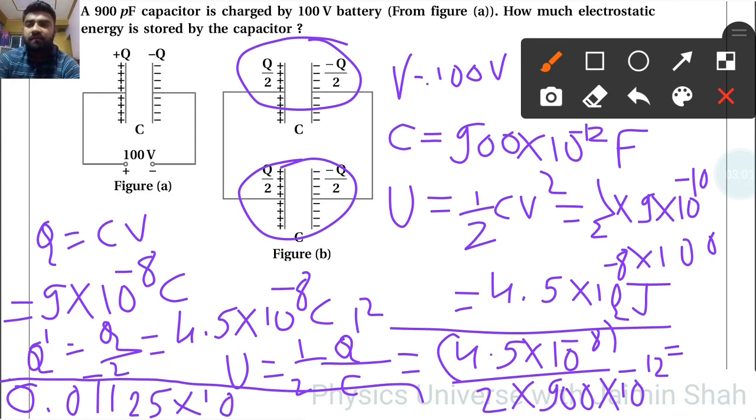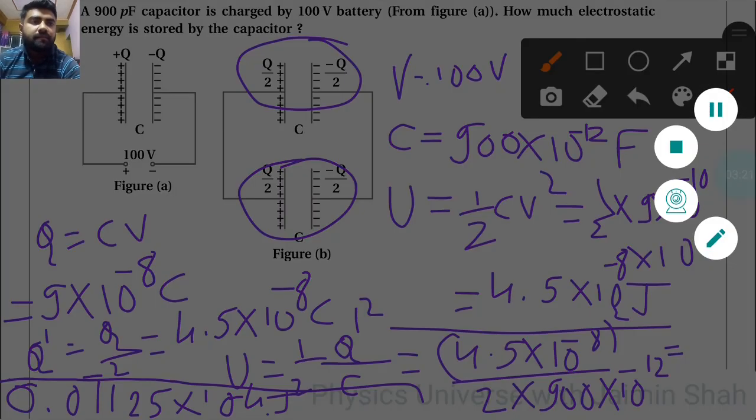Minus 8 to minus 16, so minus 16 plus 12, that is 10 raise to minus 4. So here minus 4 will be there, and this is the new energy.